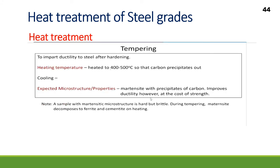Tempering is performed after hardening to impart ductility to steel. Since martensite is very hard and brittle, even a small impact can fracture the hardened product. Tempering is done by heating to 400–500°C so that carbon precipitates out. There is no specific cooling requirement. The result is martensite with precipitates of carbon, which improves ductility at the cost of some strength. During tempering, martensite decomposes to ferrite and cementite.